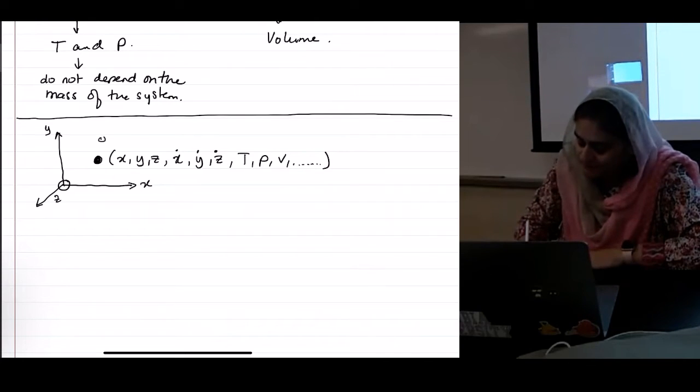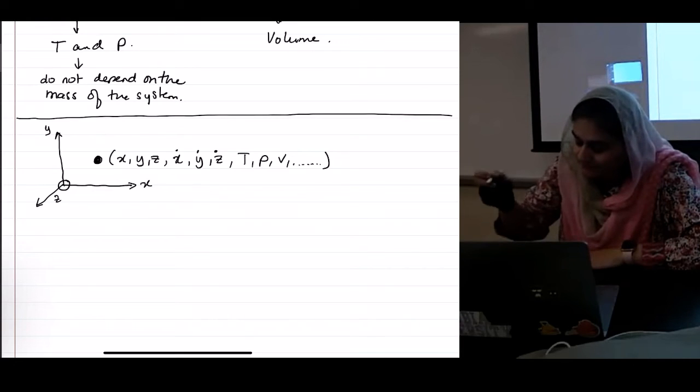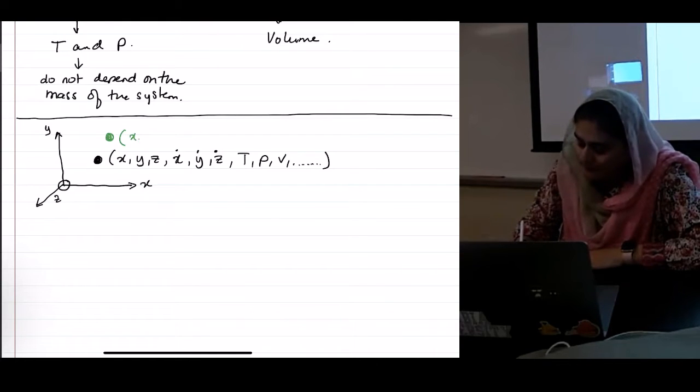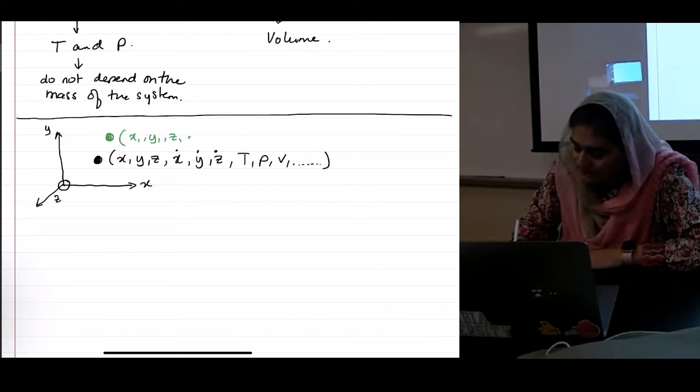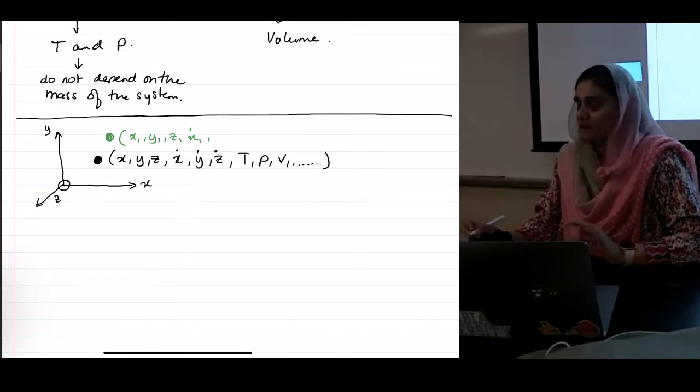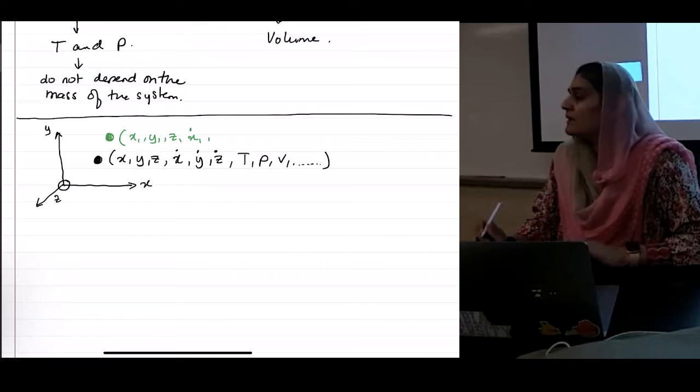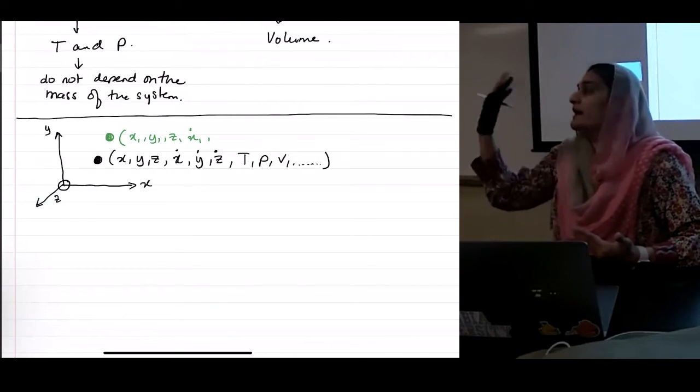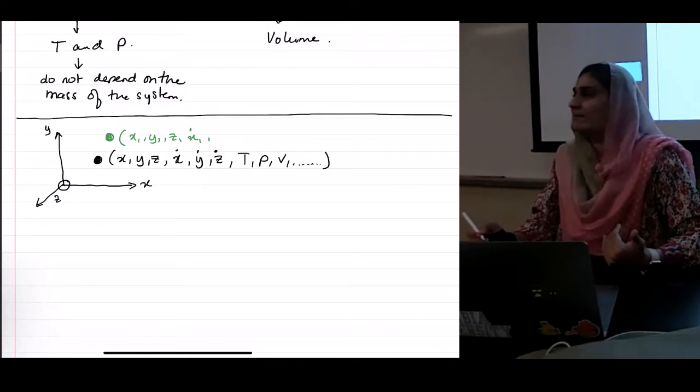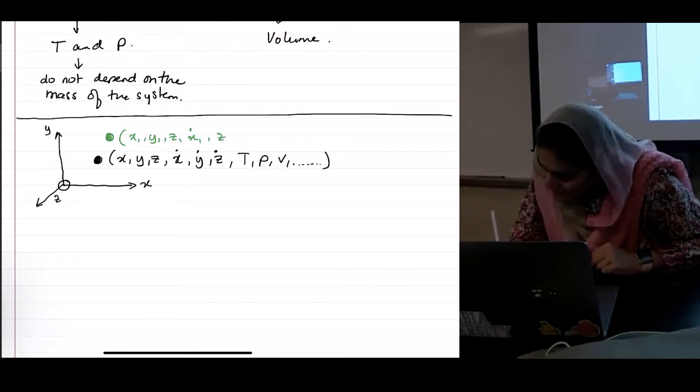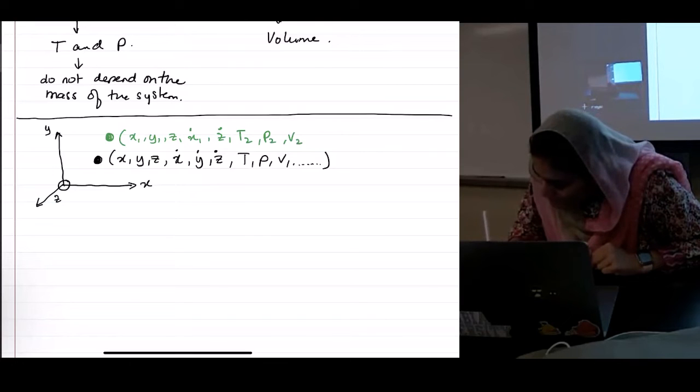Now I put another particle here. Pick a color. Green. There's another particle here. What do I have to do? X1, Y1, Z1, X1 dot. Everybody understands X1 dot, Y1 dot, Z1 dot, right? What does it mean? Derivatives. It's the derivative, right? And the derivative of X is velocity. So that basically means it's velocity in the X, velocity in the Y, velocity in the Z. I should also add time in there if it's an evolving system. This is going to get fun just as it is. T2, P2, V2.